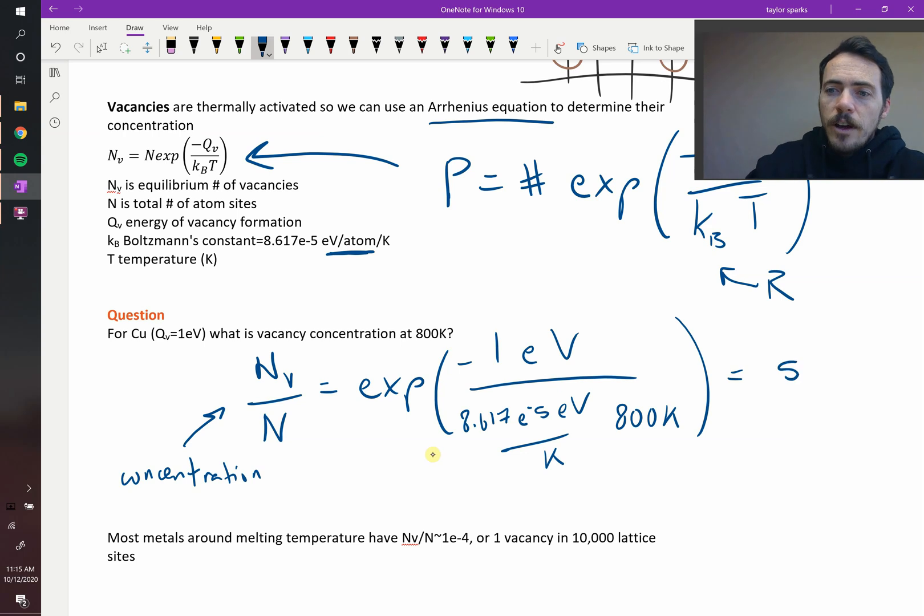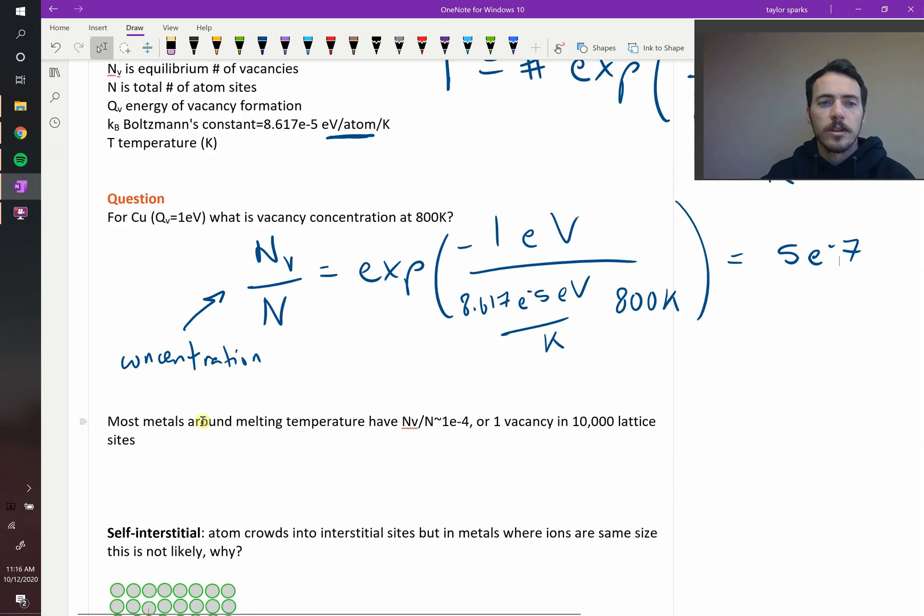When I plug all those into my calculator, I get a value of 5e to the negative 7. So, what this means is that even in a metal like copper, which has a relatively small vacancy formation energy, 1 electron volts, and a relatively high temperature, 800 Kelvin, you still have very few vacancies. It's not like you get a huge fraction of your crystal is empty. It's a very small amount, 1 per 10,000-ish. In fact, for most metals, if you look up the values of their formation energies, and you look up temperatures near their melting temperature, all the way clear up to their melting temperature, when you might expect that there's lots of thermal energy to break these enthalpic bonds and allow entropy to dominate, you still only get concentrations around 1e to the negative 4. So that would be one vacancy per every 10,000 sites. So it's not like these things are everywhere. They're still relatively rare.